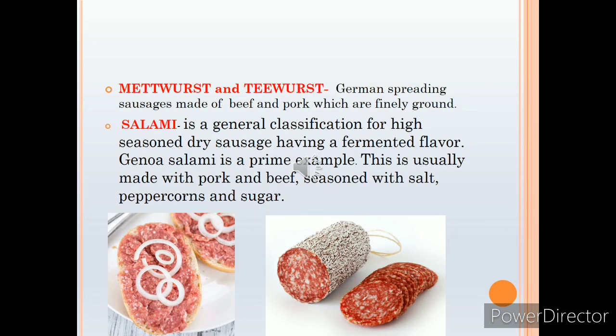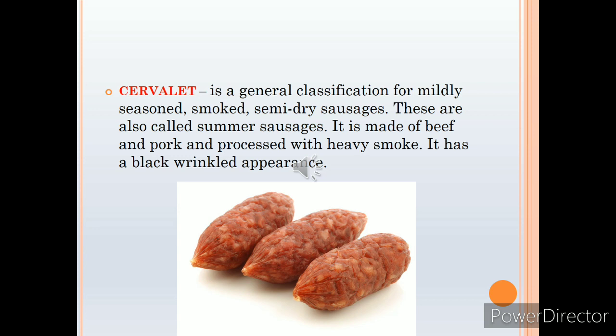Mettwurst and Teewurst are both from Germany — they are spreadable sausages that are a little loose in texture, made from beef and pork. Salami is a highly seasoned dry sausage with a fermented flavor; Genoa salami is the best example, made from pork and beef and seasoned with salt, peppercorns and sugar. Cervelat is a mildly seasoned smoked semi-dry sausage; these sausages are also called summer sausages, made from beef and pork and then smoked. They are a little wrinkled — the texture is not smooth from the surface, as you can see.